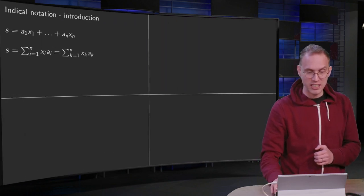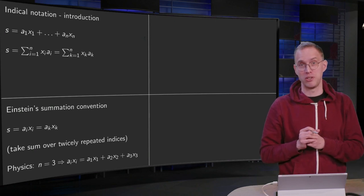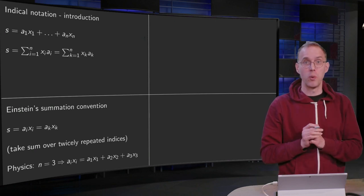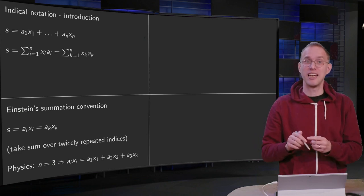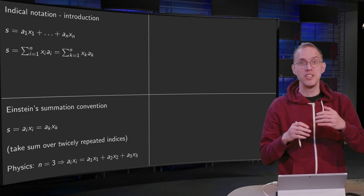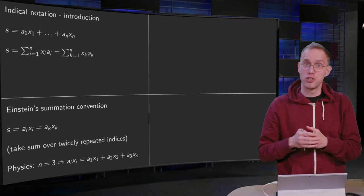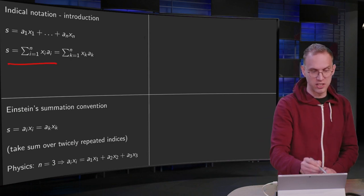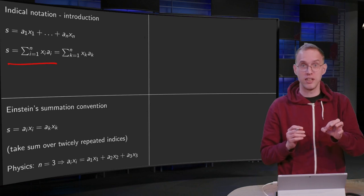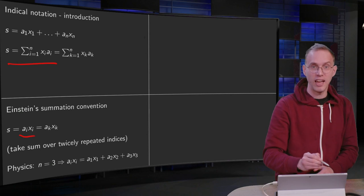Now we can write this even shorter using what is called Einstein's summation convention. So what is the idea? If you have an expression in the index that occurs twice, we implicitly mean with that that we have to sum over this index.